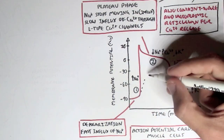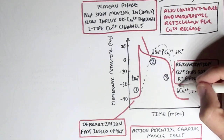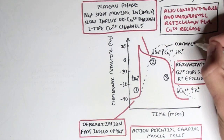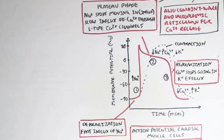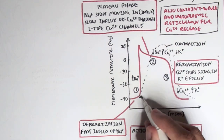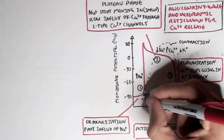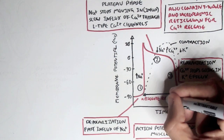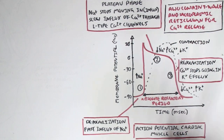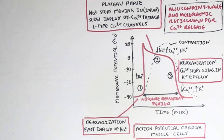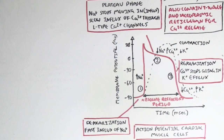Essentially what is happening is that from negative 90, the membrane potential jumps up to positive 30 — this is the contraction, similar to what you'd see in a skeletal muscle contraction graph. The point at which an action potential changes the membrane potential of a heart cell to where it finishes is a period where a second action potential cannot occur. This period is known as the absolute refractory period.